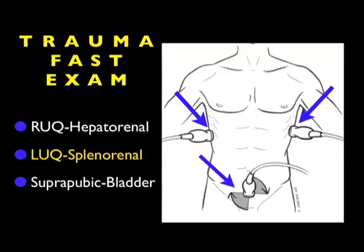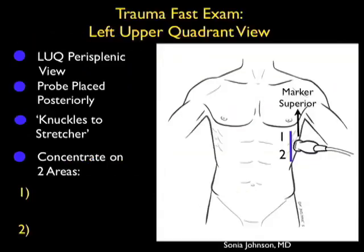In an upcoming module, we'll look specifically at the suprapubic or bladder view of the trauma fast exam. There's a lot of information we can gain by looking at the left upper quadrant in our trauma patients, and we'll need to know that it's not a mirror image of the right upper quadrant — that the spleen offers less of an acoustic window onto the left upper quadrant than the liver does on the other side.